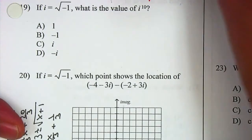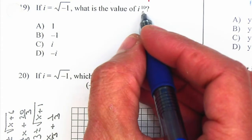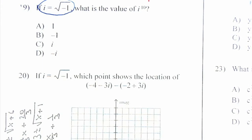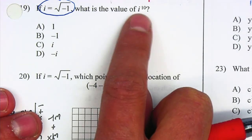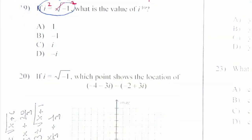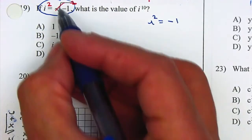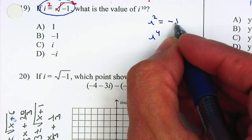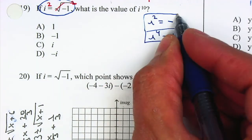For problem number 19, they tell us if i is equal to the square root of negative 1, what is the value of i to the 10th? We can take the square root on both sides — the square roots cancel — so we end up with the first definition we need: i squared is equal to negative 1. If you square both sides, that will become i to the 4th, and negative 1 times negative 1 becomes positive 1. Those are the two definitions we're going to use.